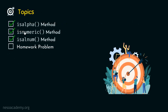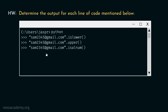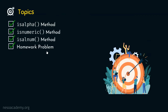We are done with all three topics. The homework problem is: determine the output for each line of code shown. Try solving this on your own first, then compare your output with the command prompt. After getting the answers, post them in the comment section below. This concludes all topics for this presentation. Thank you for watching, and I will see you in the next one.